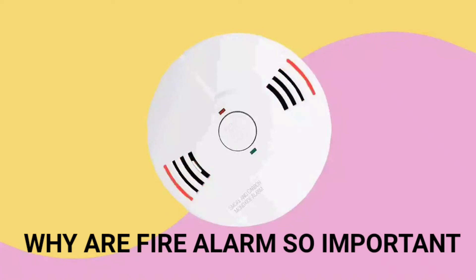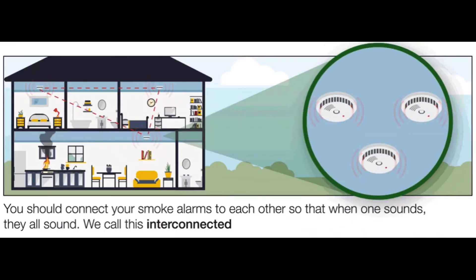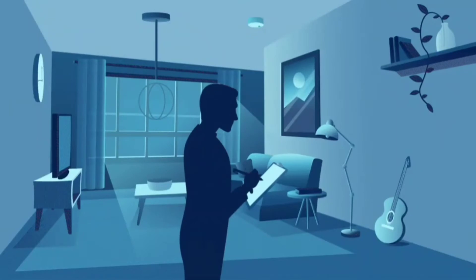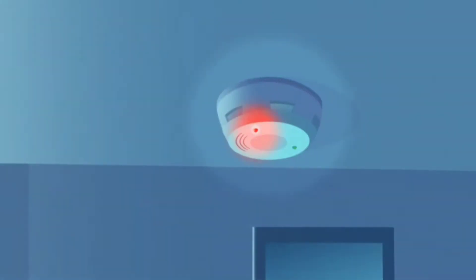Why are fire alarms so important? A smoke alarm is critical for the early detection of a fire in your home, and could mean the difference between life and death. Fires can occur in a variety of ways and in any room of your home. But no matter where or how, having a smoke alarm is the first key step forward for your family's safety.